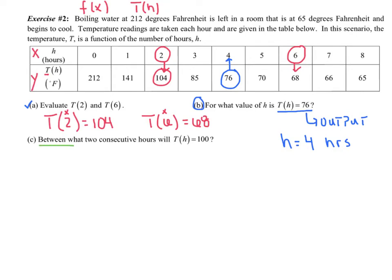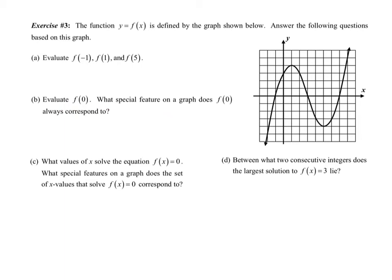All right. Let's see. Part C now. Okay. Between which two consecutive hours would T of H equal 100? Now again, 100 is an output. And what you'll notice is as I scan the second row, there are no 100s in this row. So I'm going to kind of have to just guess. I would say the 100 would fall right around there, somewhere between the 104 and the 85. So I'm going to say between which two consecutive hours, it would be somewhere between 2 and 3. Somewhere between 2 and 3 hours. You know, approximately maybe 2 hours and 15 minutes. Maybe 2 hours and 10 minutes. Somewhere around there, it would drop down to a temperature of 100.